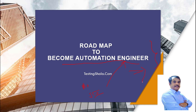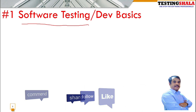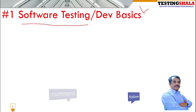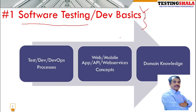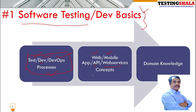The first thing you should do in order to become a software test automation engineer is to know the basics. It could be software testing processes or development processes — SDLC, STLC, V&V model, Agile model — as well as development methodologies. You should also know the concepts of web applications, how web applications are built, how mobile apps are built, and how APIs and web services are working.